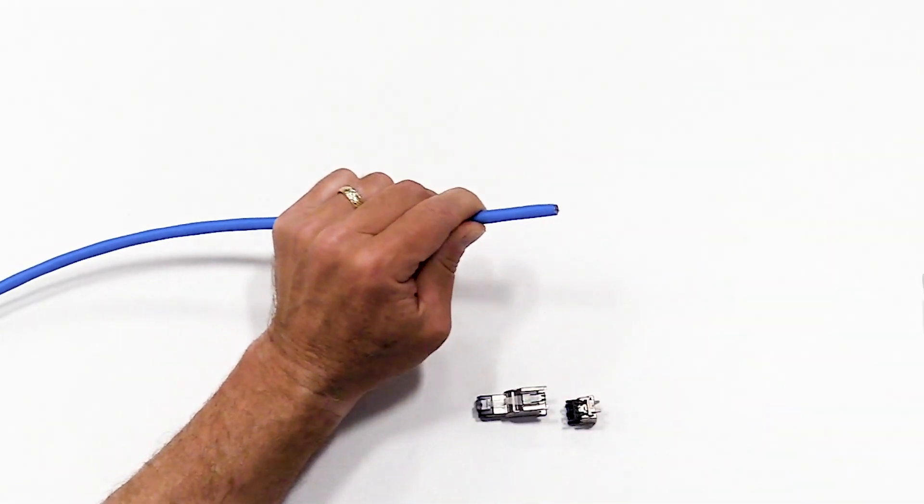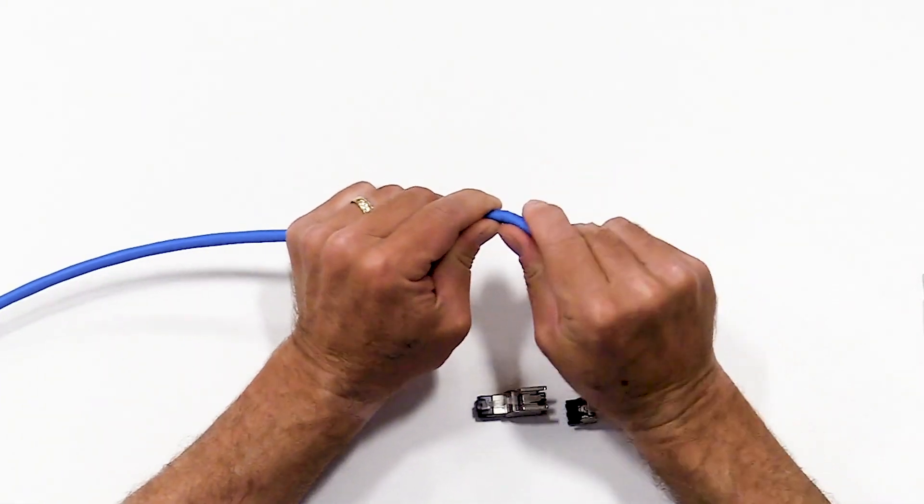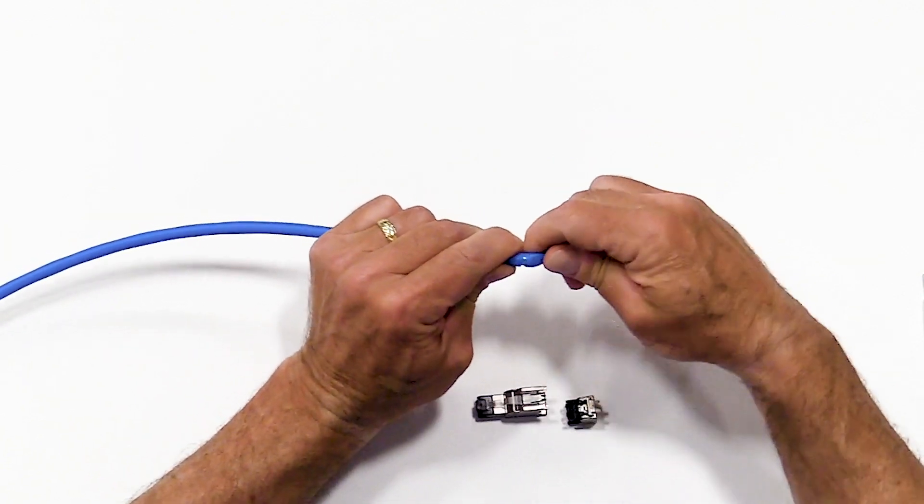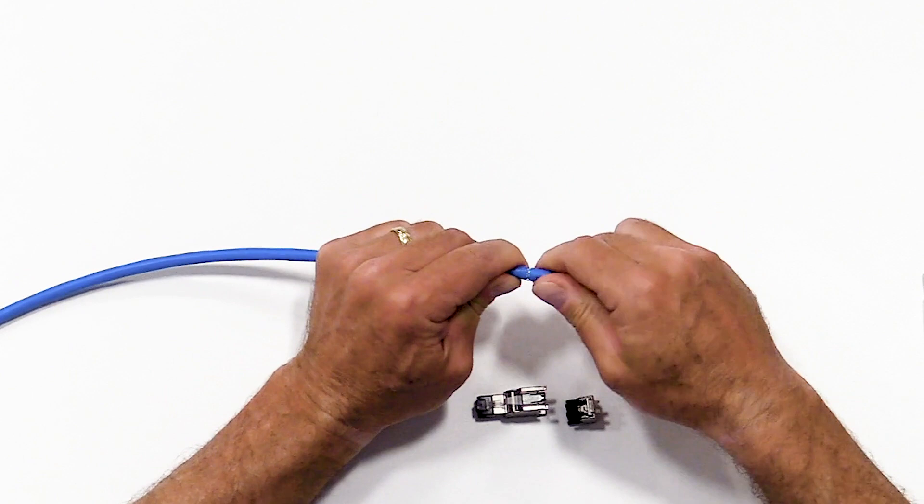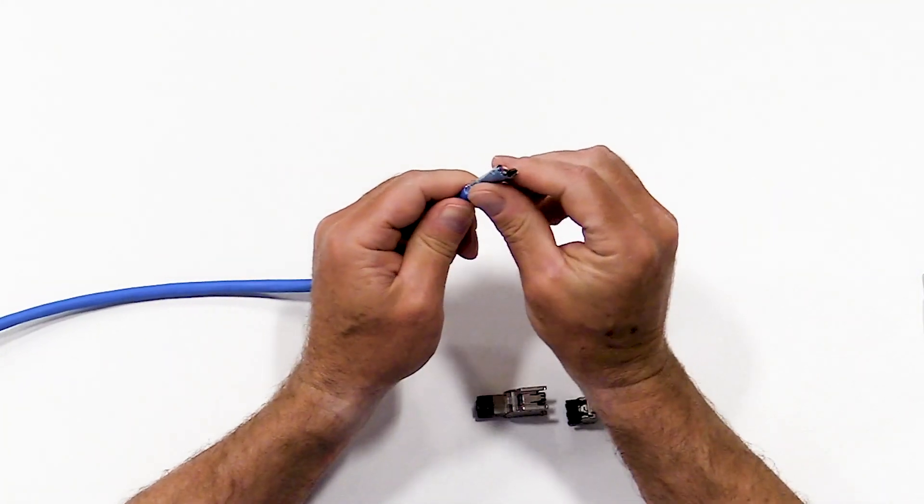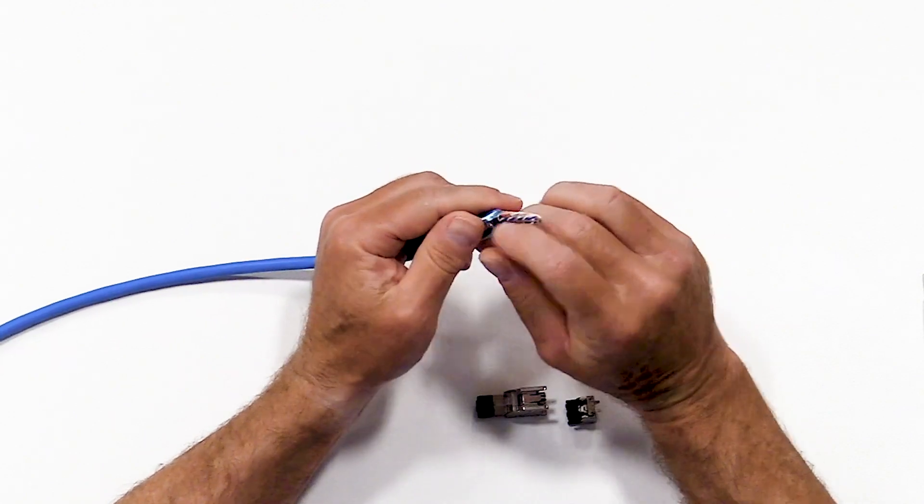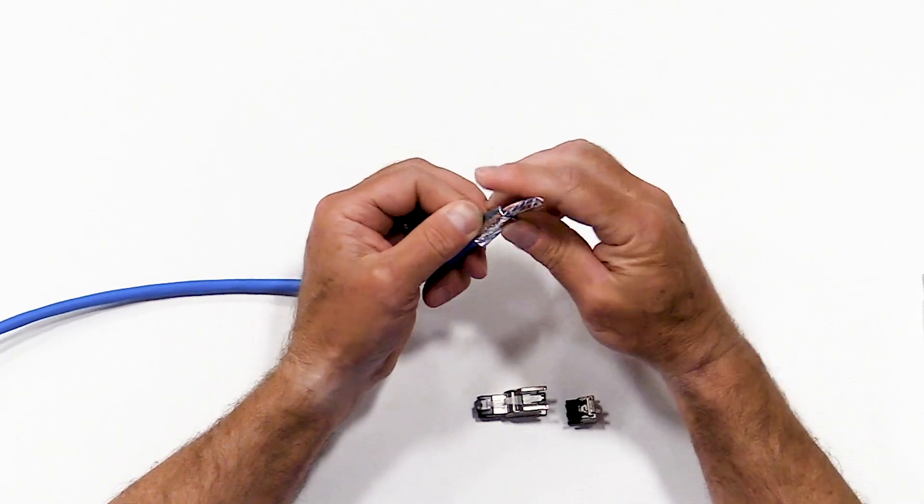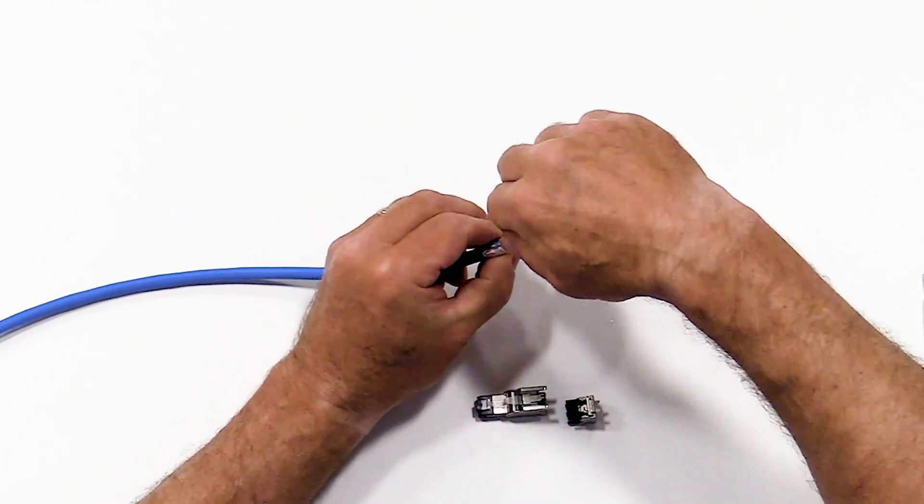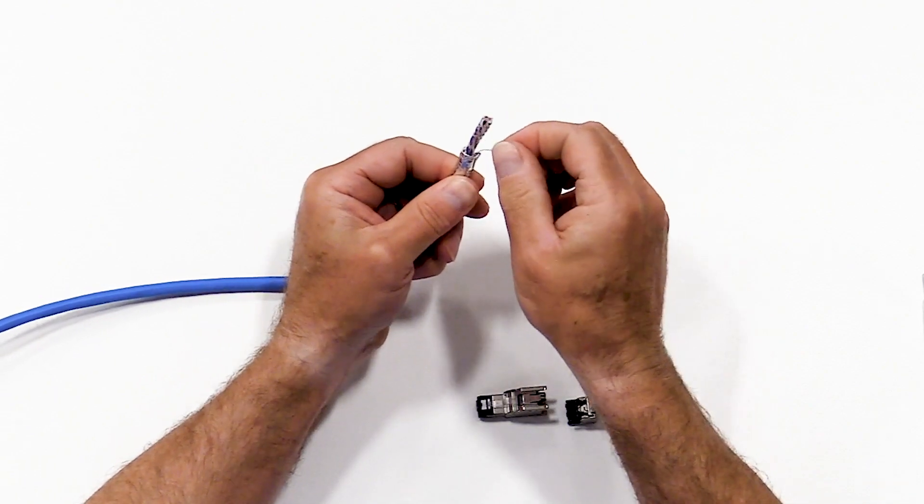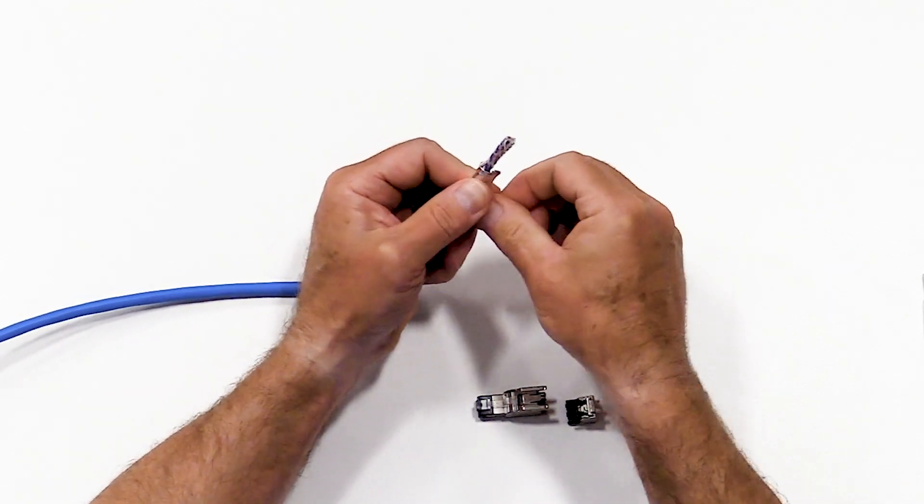First, score the cable, being careful not to cut off the foil that exists around the conductors. Peel the foil down to wrap around the jacket. Using the drain wire, pull it down over the foil.